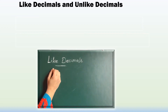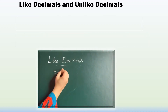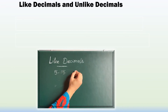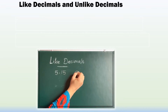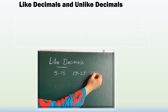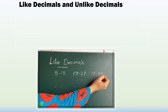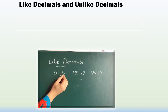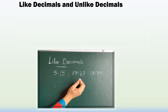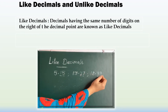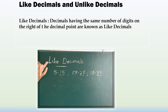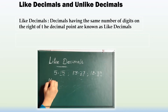Like decimals: if a number has the same number of decimal places, then it is called like decimals. For example, 5.15, 13.27, and 18.39 each have 2 decimal places. Since each has the same number of decimal places, they are called like decimals.